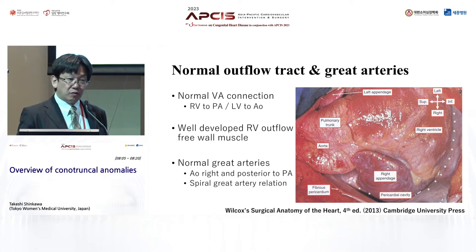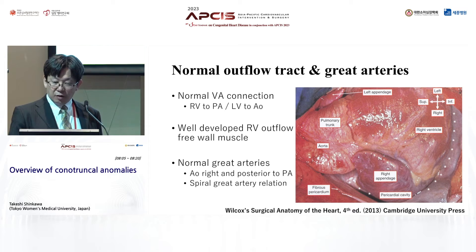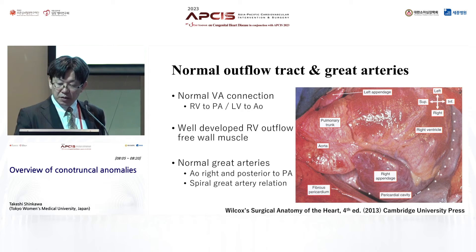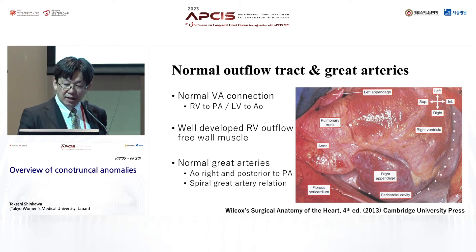Let's see the conus outside the normal VA connection — this is a surgeon's view, with the screen's left being the patient's head. In the normal heart, the connections are RV to PA and LV to aorta. You can see the well-developed RV outflow free wall musculature but you cannot see the LV outflow musculature. You can see the spiral relationship in the great arteries. The LV sits dorsal and left in the pericardium, but the aorta comes up to the ventral and right, going beneath the pulmonary valve and over the pulmonary artery. The RV sits ventral and right, but the pulmonary artery comes to the left and over the aortic valve, diving down behind the aorta.